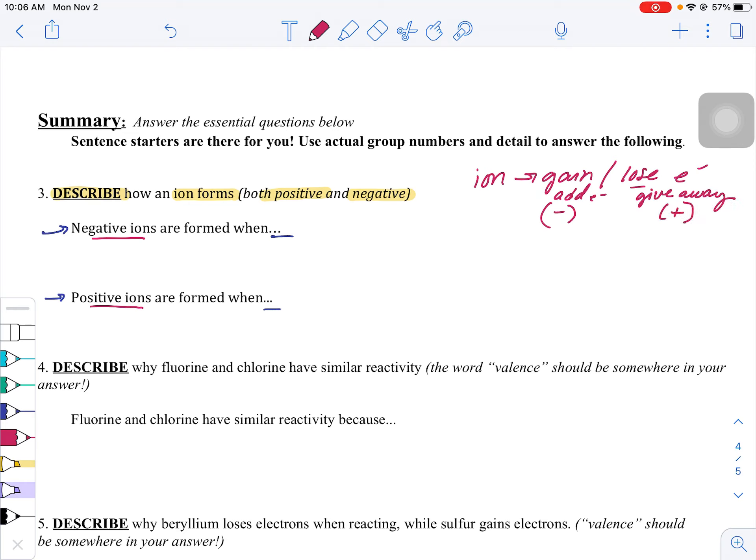Ending up as a positive ion because now they end up with more protons than electrons. And this was practiced in your FET example.